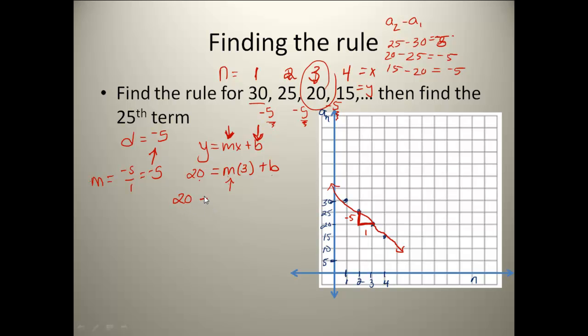Right now I have 20 equals, now I'm going to plug in my negative 5 for my slope, solve this out for b, and I end up getting that b equals 35. So now, if I come back to my y equals mx plus b form, I would have y equals, my slope is this common difference, so that would be negative 5 times x plus 35.